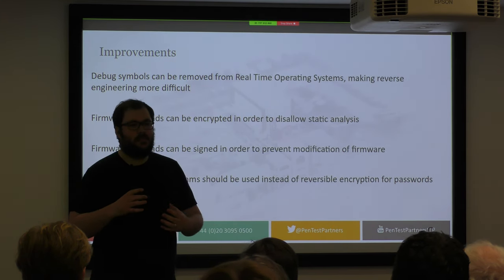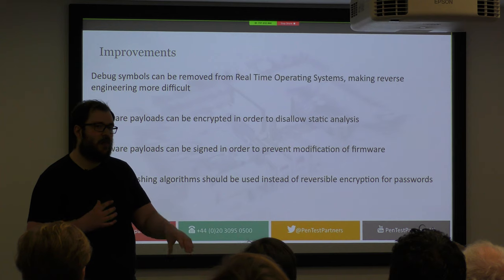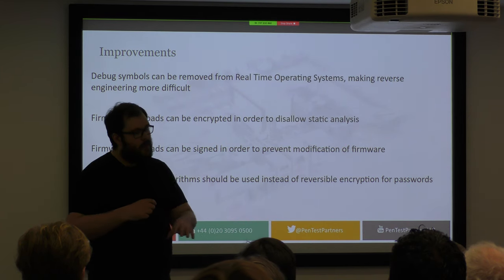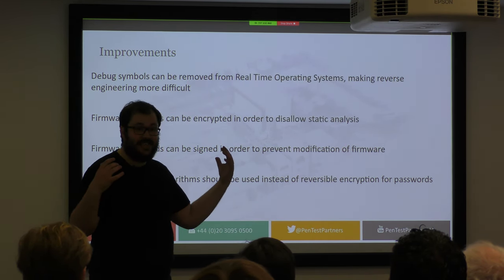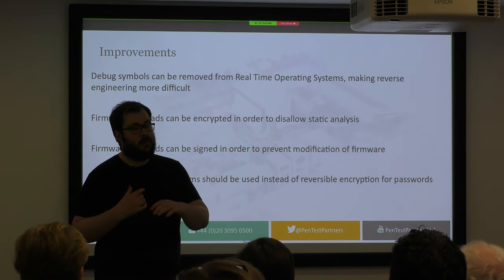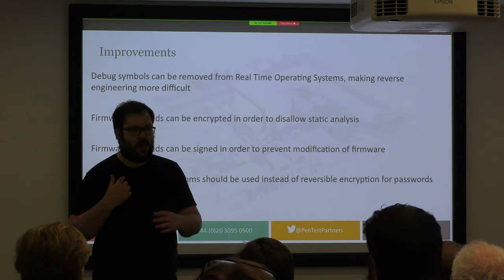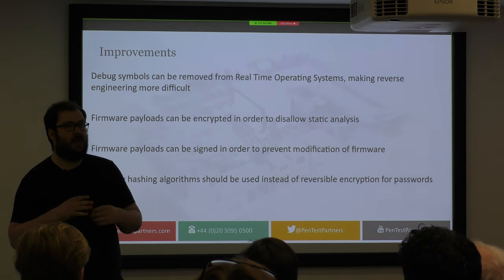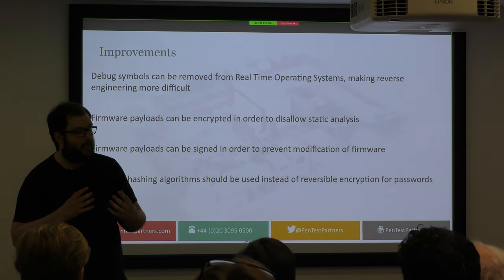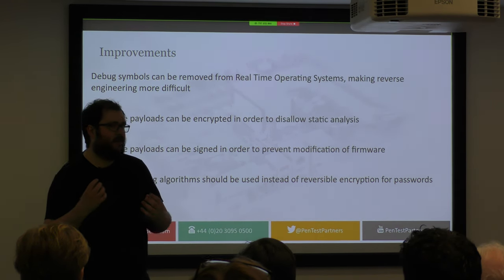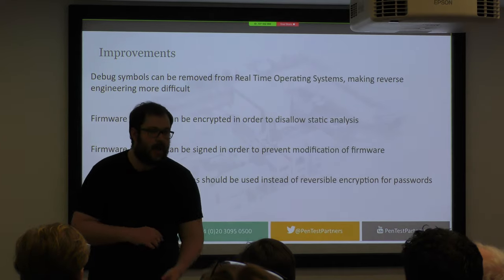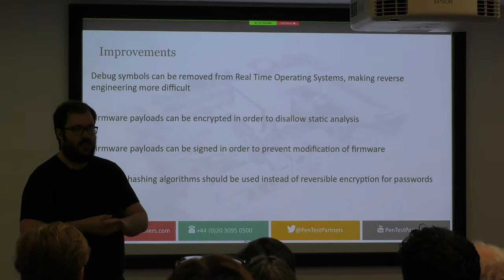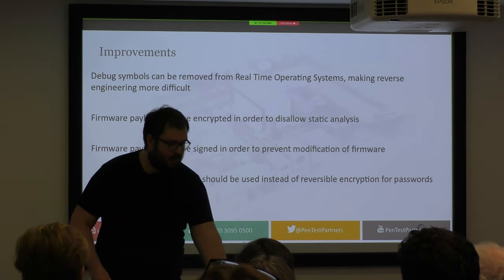Things they could have done: they should have removed the symbol table from their firmware, as it made it very easy to reverse every single part of the encryption — it took me only a couple of hours in total. Firmware payloads should be encrypted, which would have prevented easy analysis. Firmware payloads could also be signed to prevent modification. And of course, they should have used a hashing algorithm rather than reversible encryption. I sent these results to Siemens, who were very thankful, fixed the issue, deployed a fix, and publicized it.